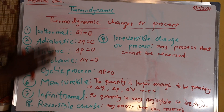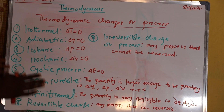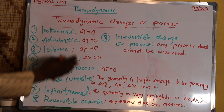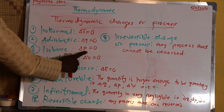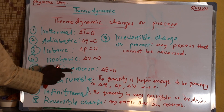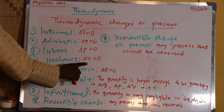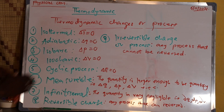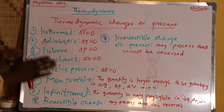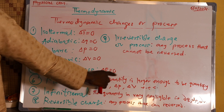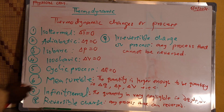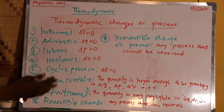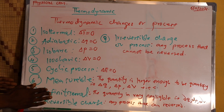Adiabatic is any process or change at constant heat pressure — ΔP is equal to zero. Then isochoric: any change at constant volume, that means ΔV is equal to zero. Then cyclic process: any change or process at constant energy, that is, change in energy is equal to zero. Then measurable: the quantity is large enough to be quantified — we can quantify and measure it — such as dQ, dP, and dV.